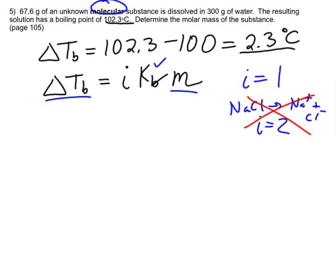We know for water, Kb, this is a constant, equals 0.52 Celsius degrees per molal. In other words, for every molal of concentration, the boiling point goes up by 0.52. So from that information, we now know change in boiling point, we know Kb, we know i, we can solve and find the molality.